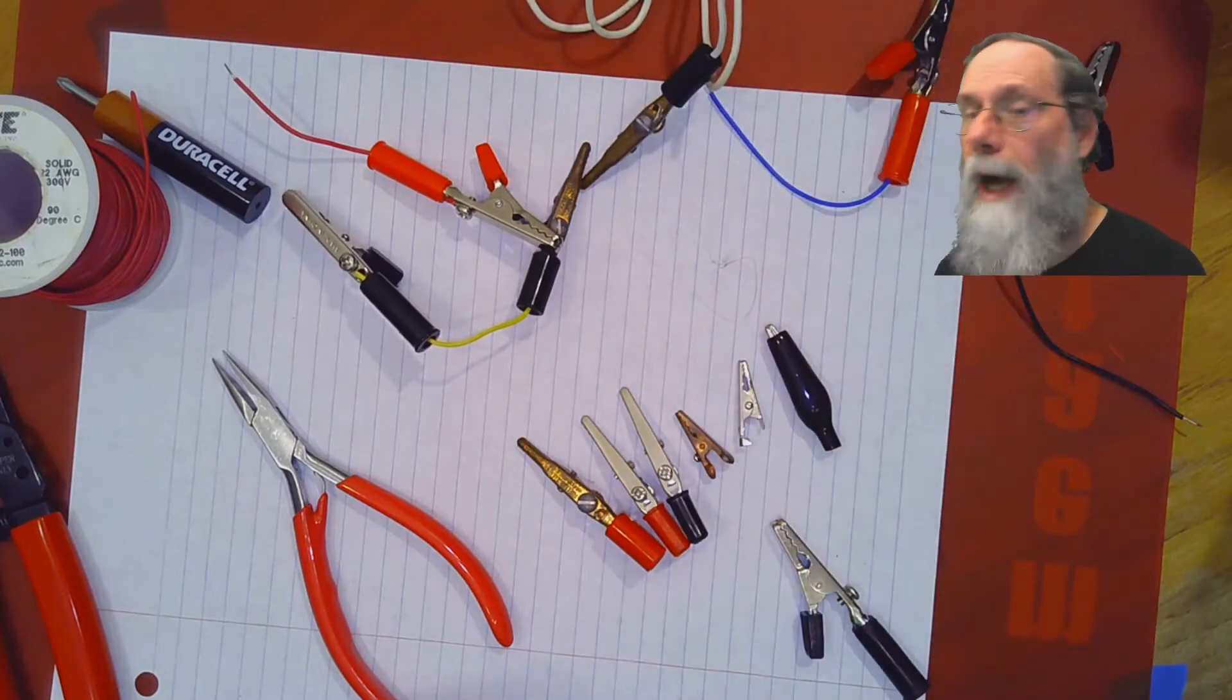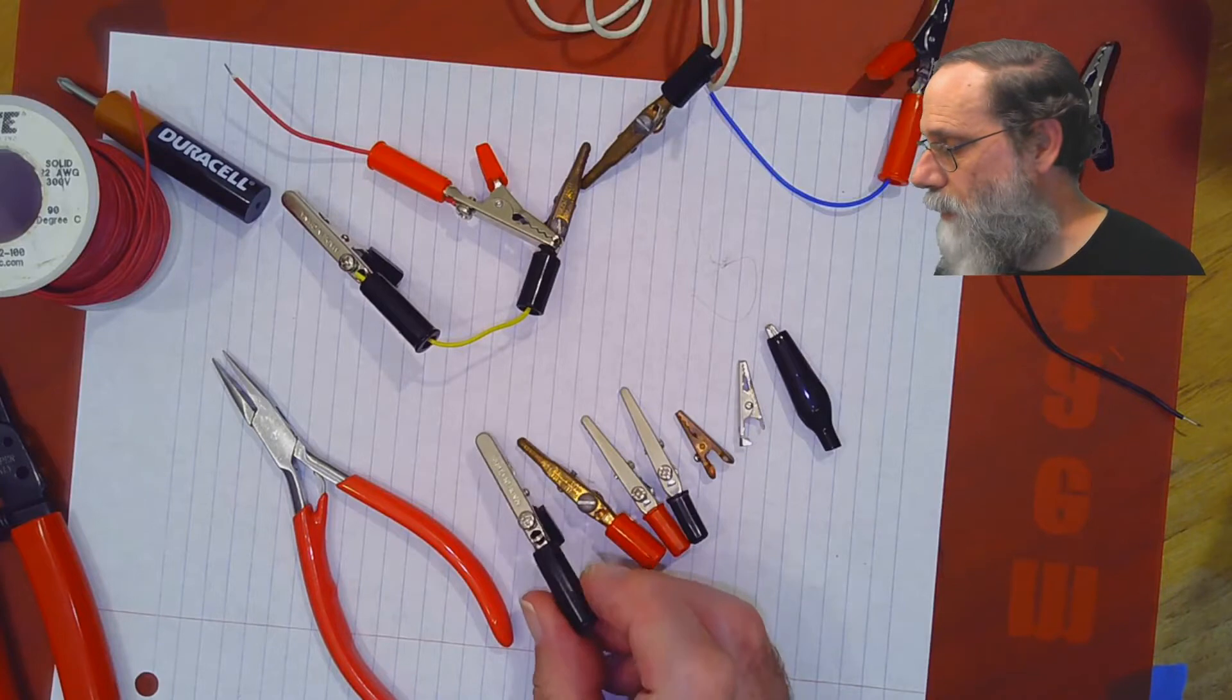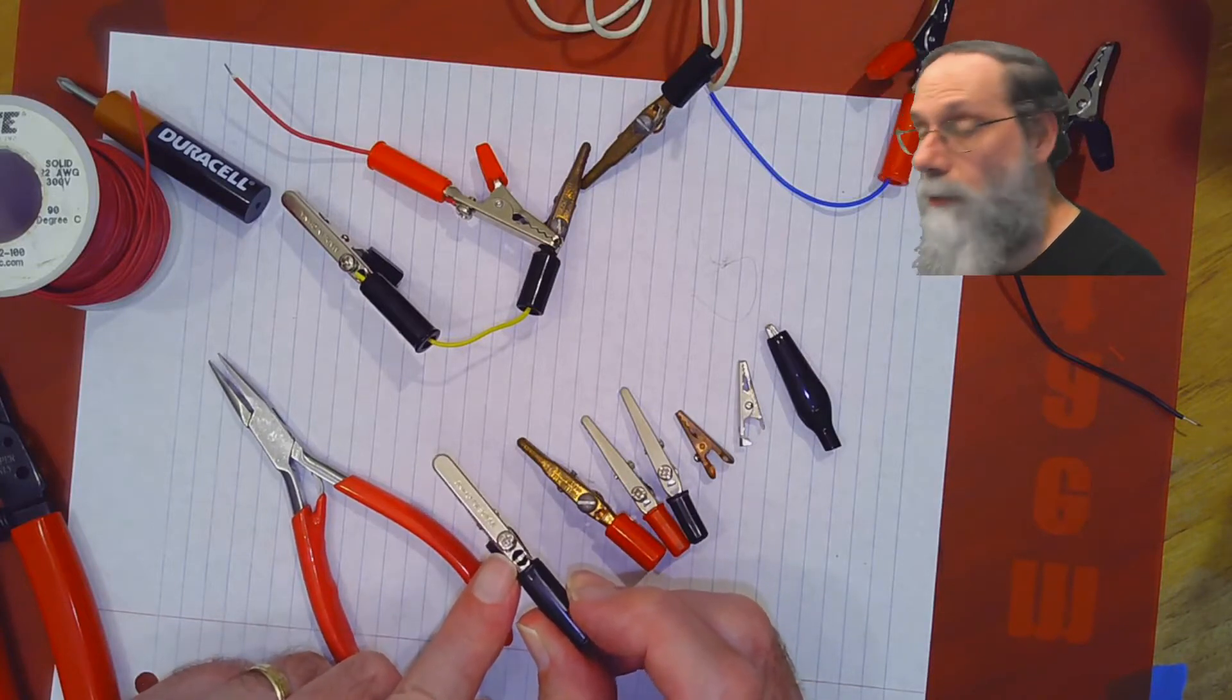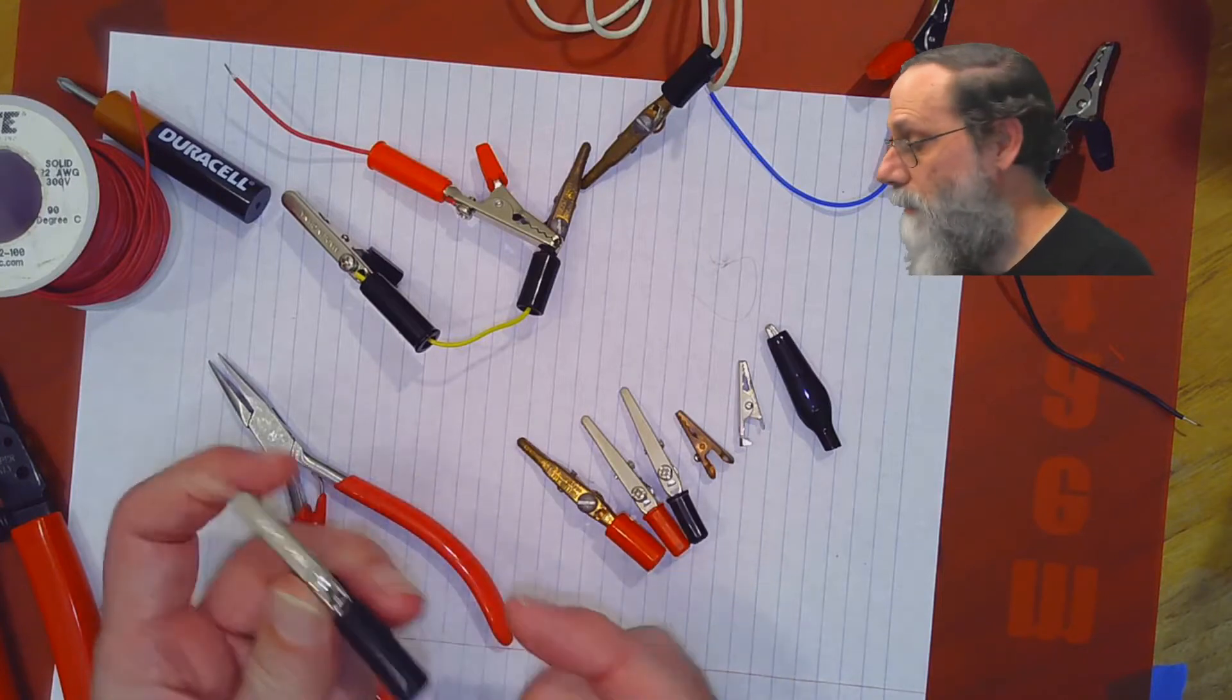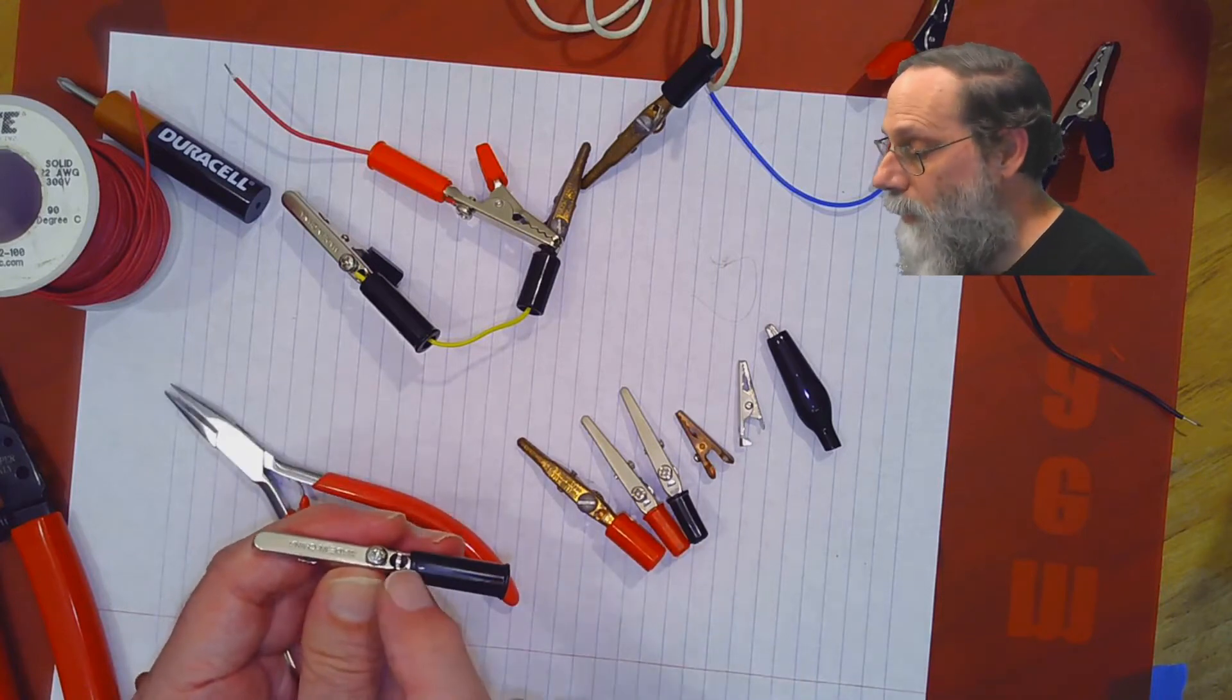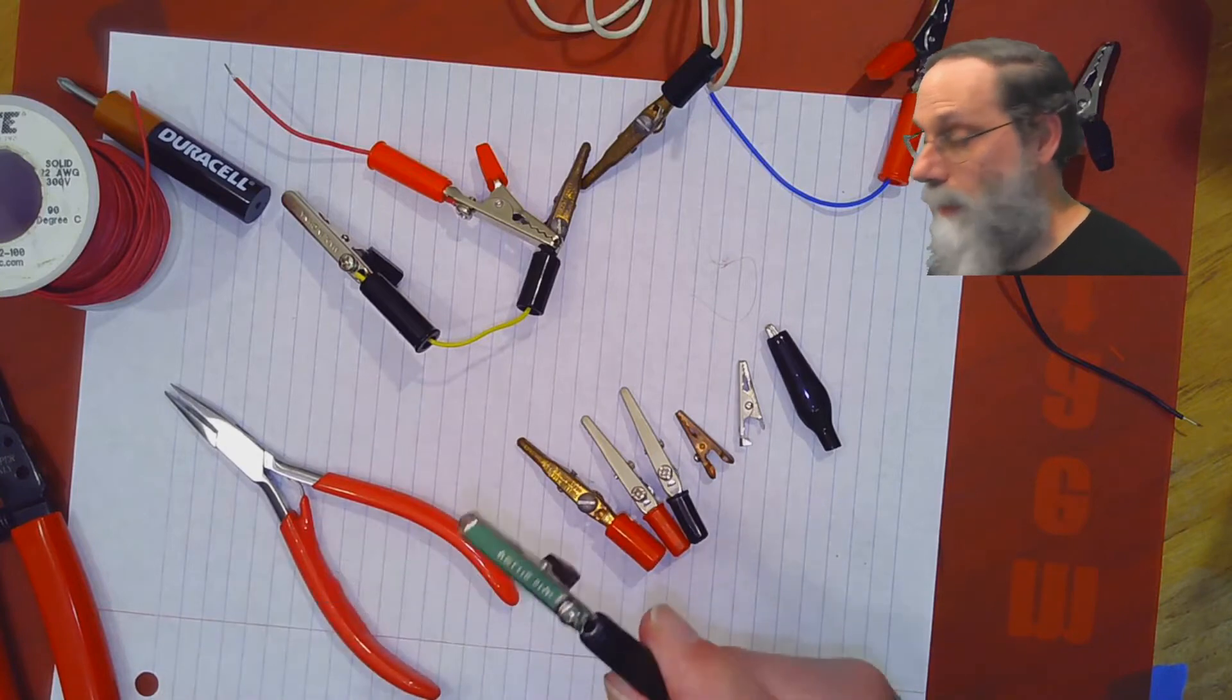So how do we make one of these alligator clips? Most of the alligator clips that we'll be dealing with have a screw on the back and a hole right next to the screw. The idea is you thread the wire through the end until it comes out this hole here, and then you wrap it around the screw and tighten the screw down to make a nice, solid, gas-tight connection.